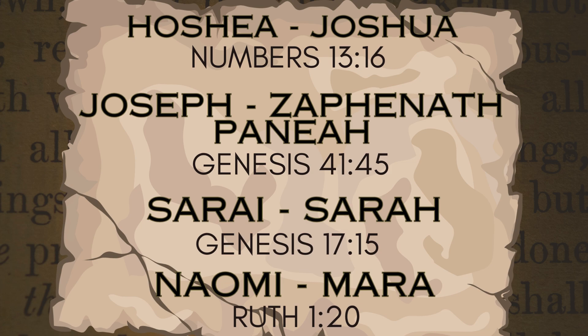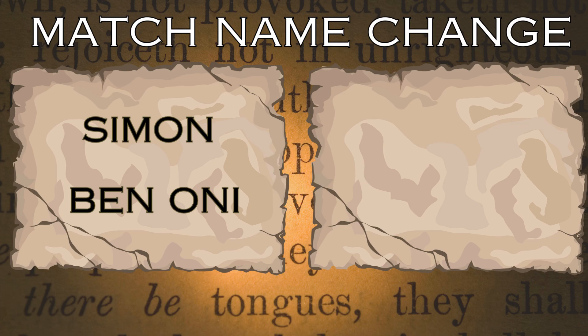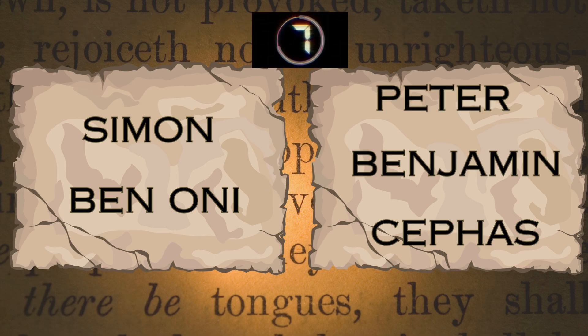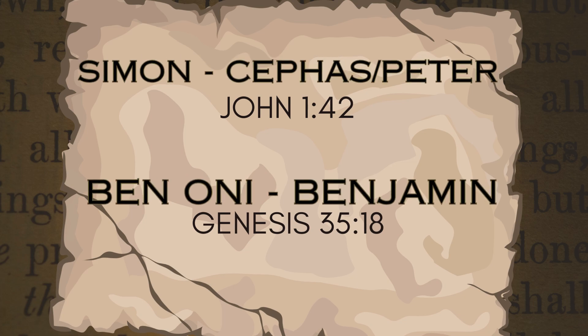Moses renamed Hosea to Joshua. Pharaoh renamed Joseph to Zaphnath-Paaneah. God changed Sarai's name to Sarah, and Naomi asked her name to be changed to Mara. Now match the original names of Simon and Benoni. No, we didn't forget a name — it was a trick question. According to John's Gospel, the disciple's name was originally Simon.